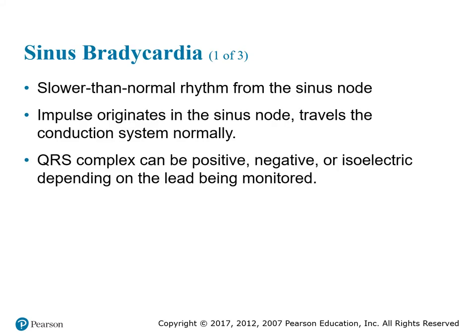The next sinus rhythm is sinus bradycardia. Sinus bradycardia is a beat that is slower than a normal sinus rhythm, meaning the impulse still originates from the SA node — it just travels down the conduction pathway a little slower. Your QRS complexes can be either positive, negative, or isoelectric depending on which lead we're looking at — whether lead 1, lead 2, or lead 3.